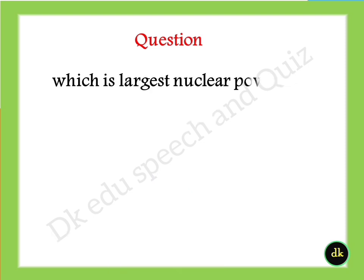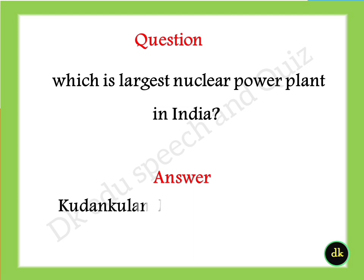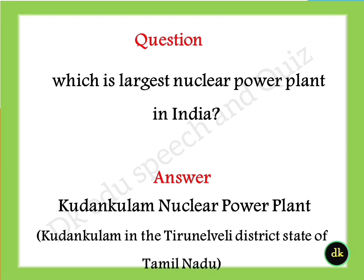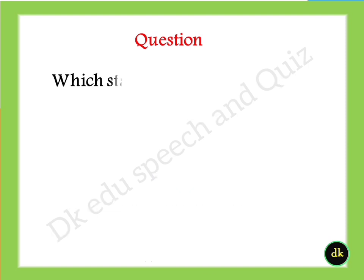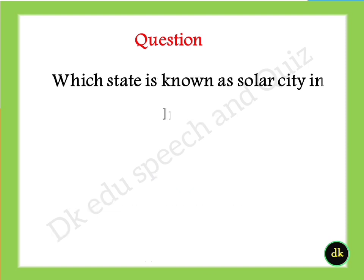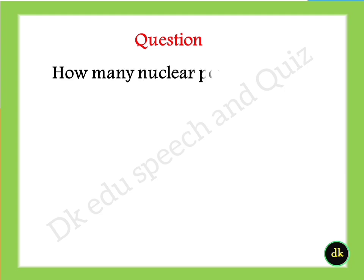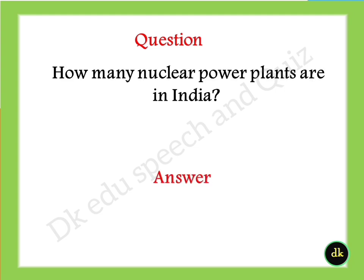Which is the largest nuclear power plant in India? Answer: Kudankulam Nuclear Power Plant, located in Tirunelveli district of Tamil Nadu. Which state is known as solar city in India? Answer: Sanchi in Madhya Pradesh. How many nuclear power plants are in India? Answer: 22 nuclear power reactors.